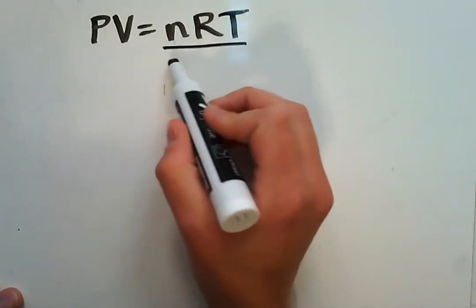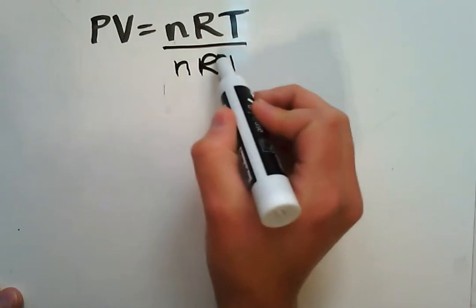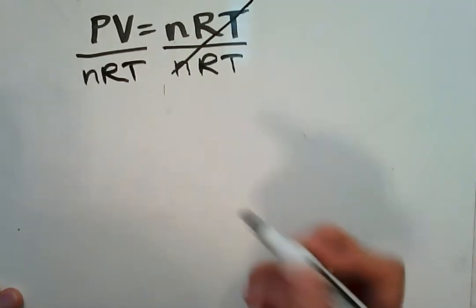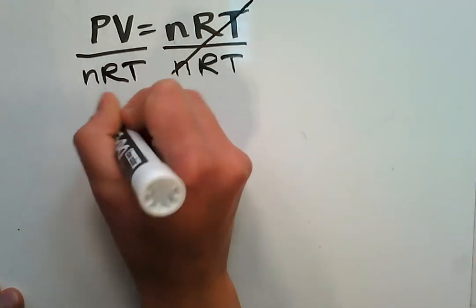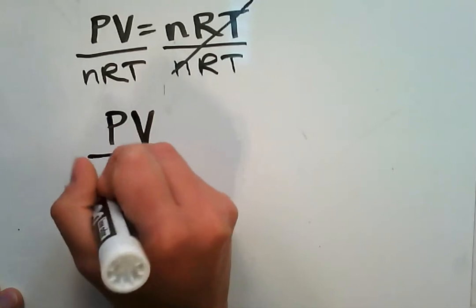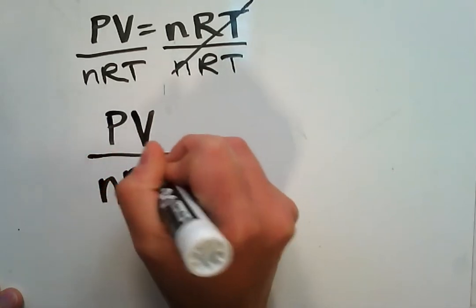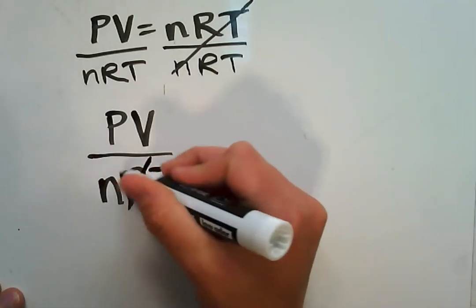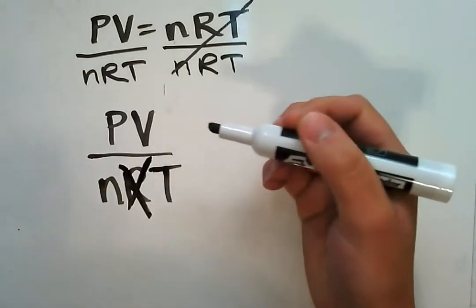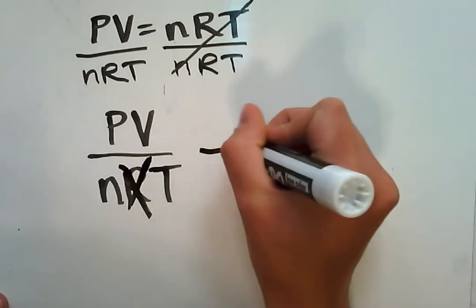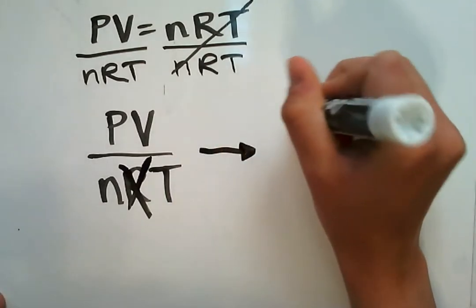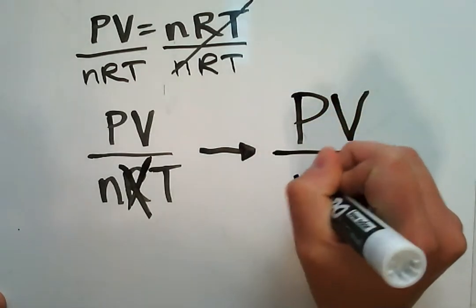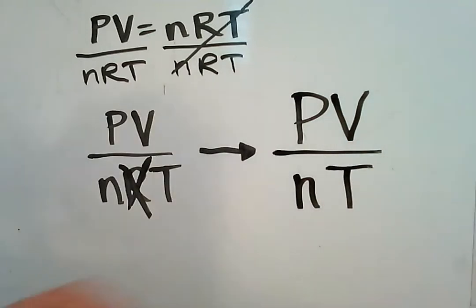Everything cancels out and we have PV over nRT. Now R is a constant so it doesn't really matter, so we're going to take R out as it only applies when we're using the ideal gas law. We're just going to keep the part of our gas law that's PV over n times T.